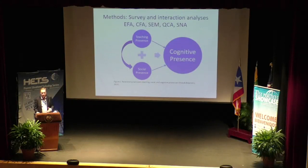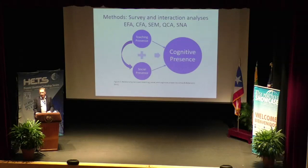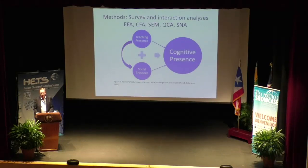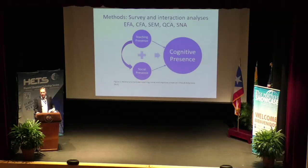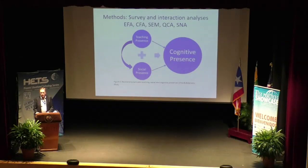A lot of what we've discovered can be summed up by this one diagram. The instructional design, facilitation of discourse, and direct instruction — the quality of those allow instructors to create an environment where students feel they can project themselves as real people and connect with others as real people. Those contribute to variance in how much students learn. Reports of high levels of learning are predicted by instructional design, organization, facilitation of discourse, direct instruction — so teaching presence, social presence, and cognitive presence. That sums up most of what I know about how people learn in online environments.